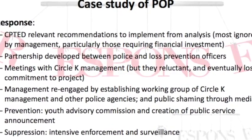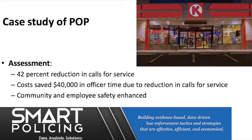They also had a focus on prevention — they put together a youth advisory commission, a public service announcement, and a few other things, as well as suppression, looking at intensive enforcement and surveillance in those particular areas. That's important to bear in mind if the local community does not like police in the first instance. Overall though, they found a 42% reduction in calls for service, a cost saving of $40,000 in police officer time, and community and employee safety overall was significantly enhanced. So it's clearly been a very effective process, which is why they published a whole journal article on it.